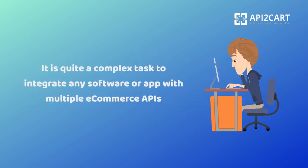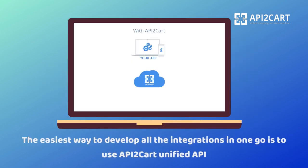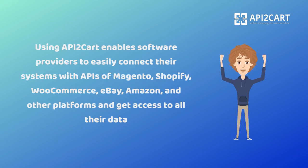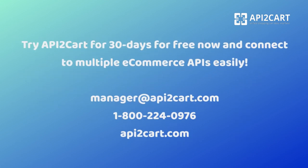It is quite a complex task to integrate any software or app with multiple ecommerce APIs. The easiest way to develop all the integrations in one go is to use API2Cart Unified API. Using API2Cart enables software providers to easily connect their systems with APIs of Magento, Shopify, WooCommerce, eBay, Amazon, and other platforms and get access to all their data. Try API2Cart for 30 days for free now and connect to multiple ecommerce APIs easily.